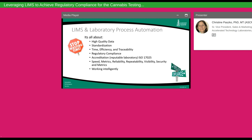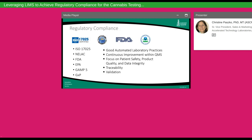Now let's talk about the regulatory compliance aspect. For cannabis testing laboratories, ISO 17025 certification is required — the most popular certification for analytical testing laboratories. There are also other certifications such as state certifications for environmental testing laboratories, NELAC for environmental testing, and food safety guidelines for organizations managing or manufacturing food products. The applicable guidelines can be easily determined with a quick literature review.